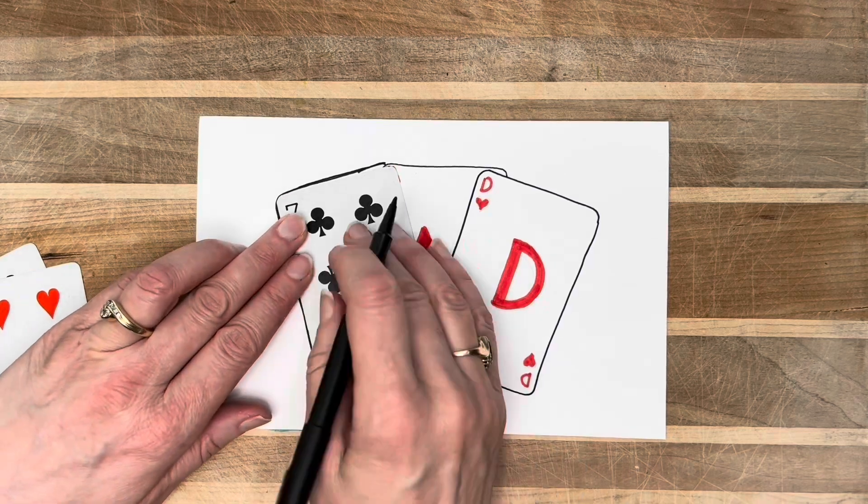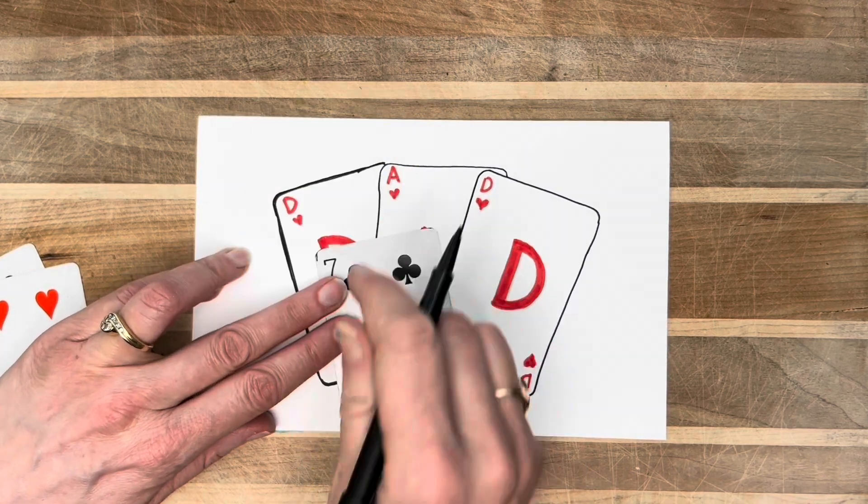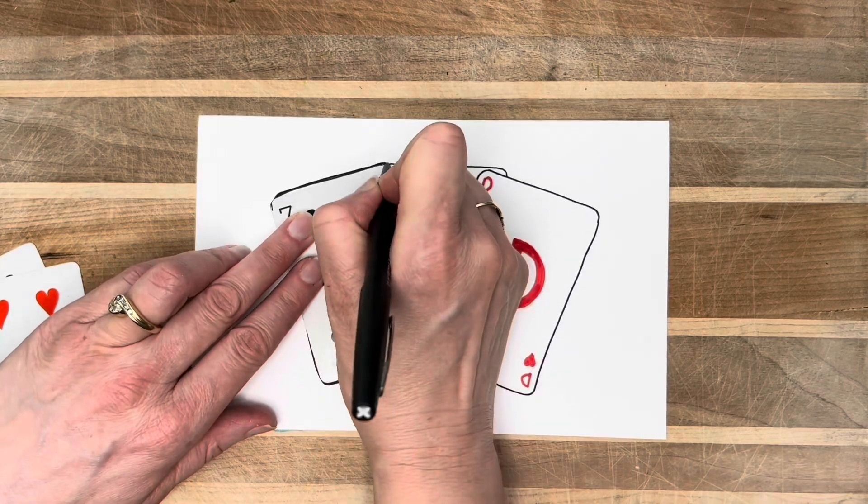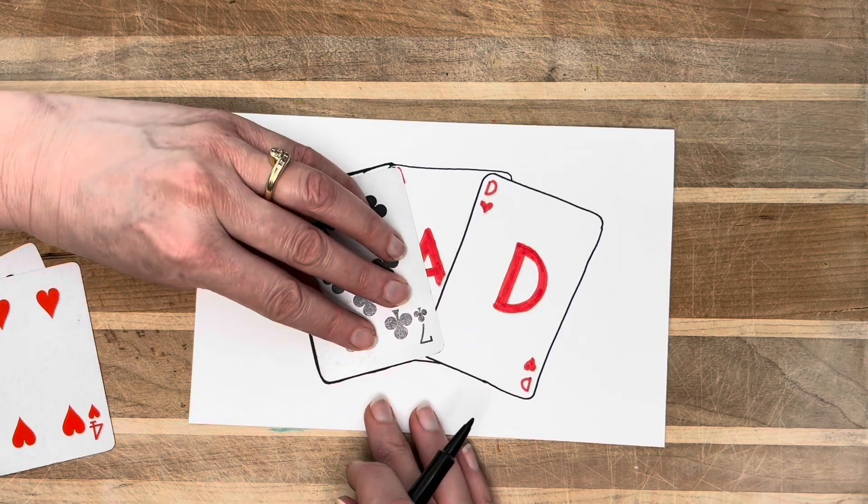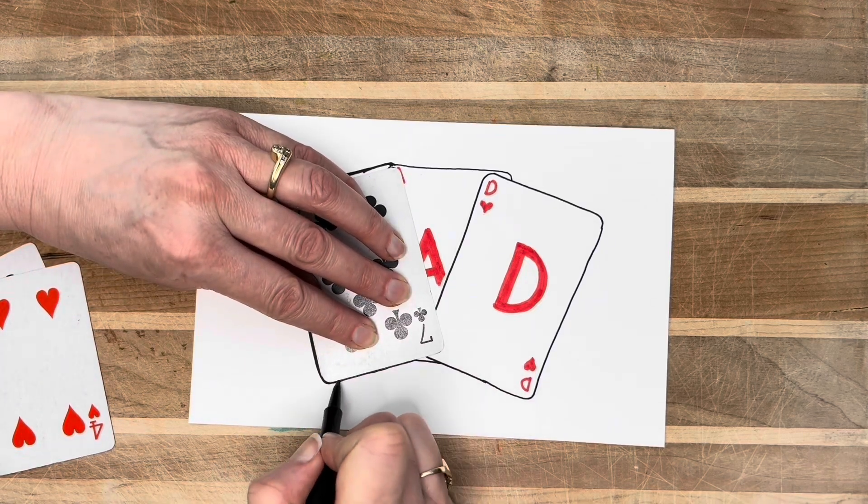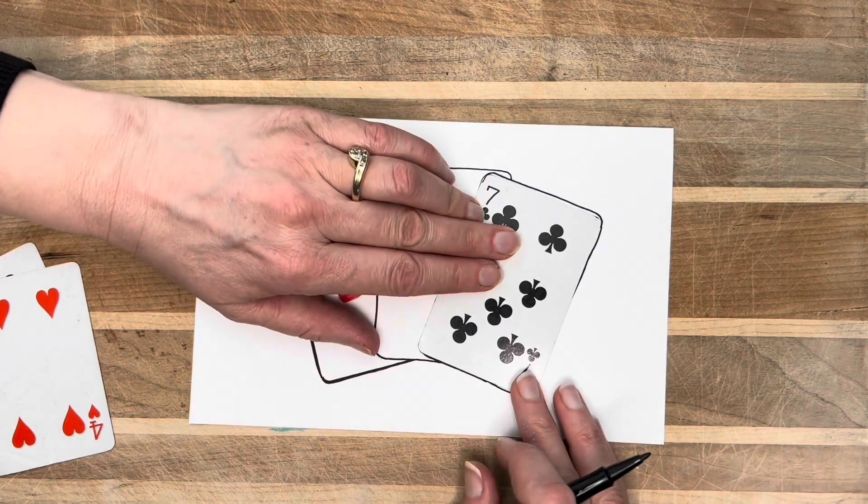Another thing you might consider is how steady your hand is. My hands are not that steady and it is very difficult for me to make a straight line and so if you do have a hand that's not as stable you can always use the card just as a stabilizer too so that will help straighten your lines that way as well.